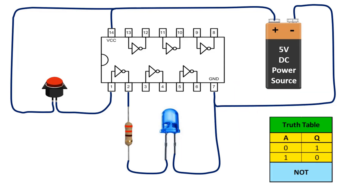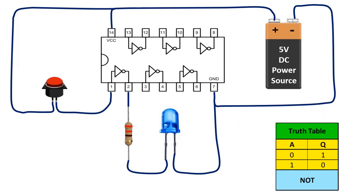The truth table of the NOT gate is as follows. If the input is 0, the output is 1 — so when the button is off, the LED will be lit. If the input is 1, the output is 0 — it will not output, and the LED will not light.